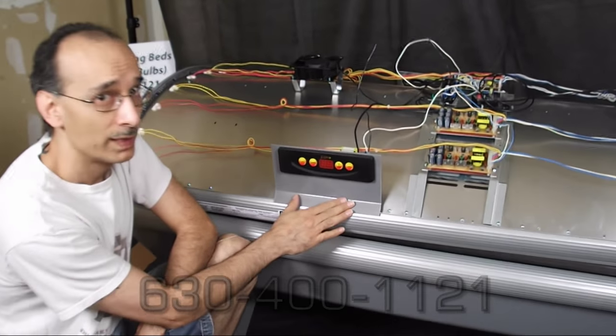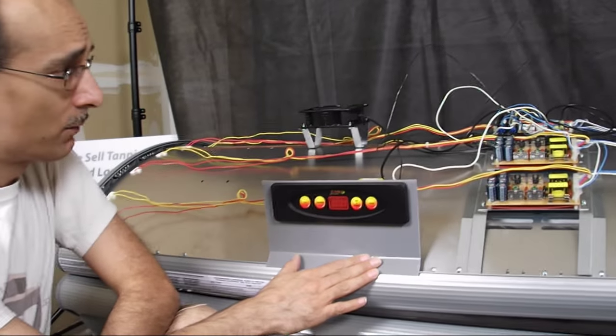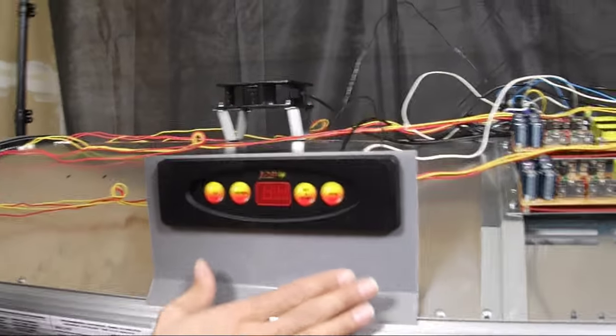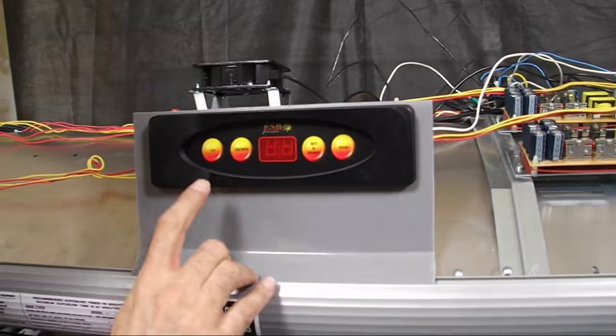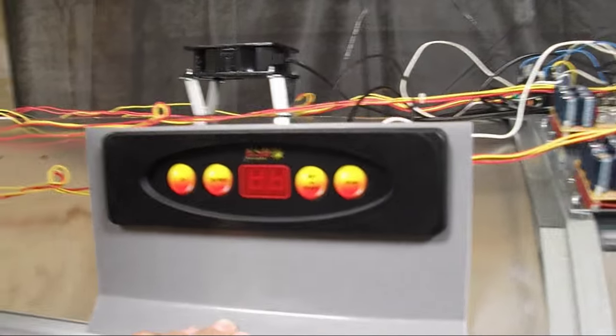This applies to 120 and 240 volt pads as well. Now for this demonstration, what we've done is we've removed the cover and I just have a little cross section here showing the timer. Now your overlay might have different graphics on here but the functionality all is the same.